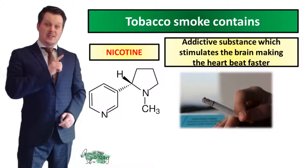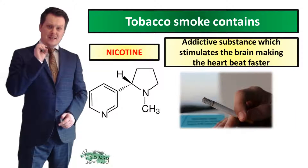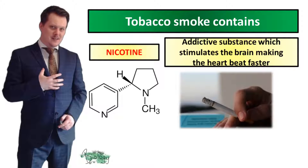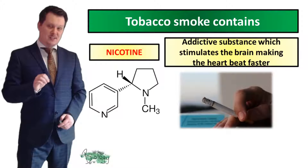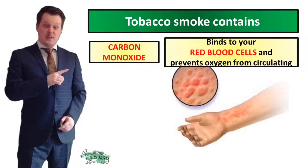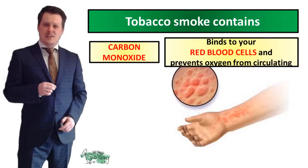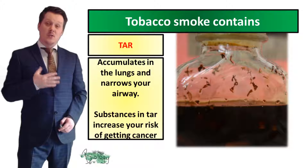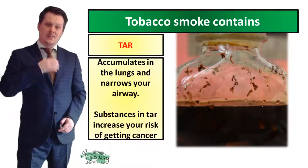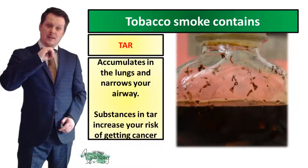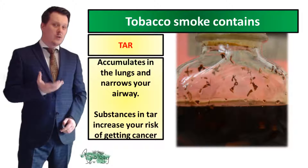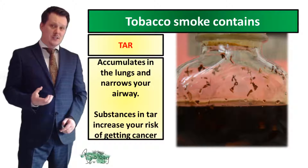Tobacco smoke contains nicotine, and this is the addictive substance which stimulates the brain, making the heart beat faster — that makes this drug a stimulant. Tobacco smoke also contains carbon monoxide, which binds to your red blood cells and prevents oxygen from circulating around the body. It also contains tar, which can accumulate in the lungs and narrow your airways. These substances also increase your risk of getting cancer — we call these types of substances carcinogens.